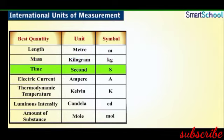Time is measured in seconds, denoted by the small letter s. A second is the duration of approximately 9 billion periods of the radiation corresponding to the transition between the two hyperfine levels of the ground state of the cesium-133 atom.